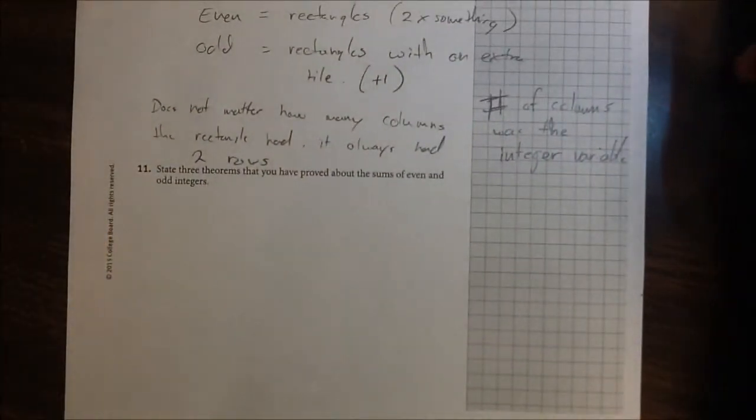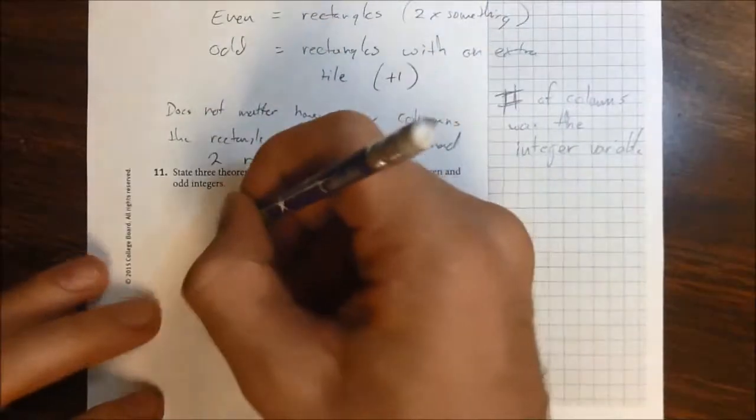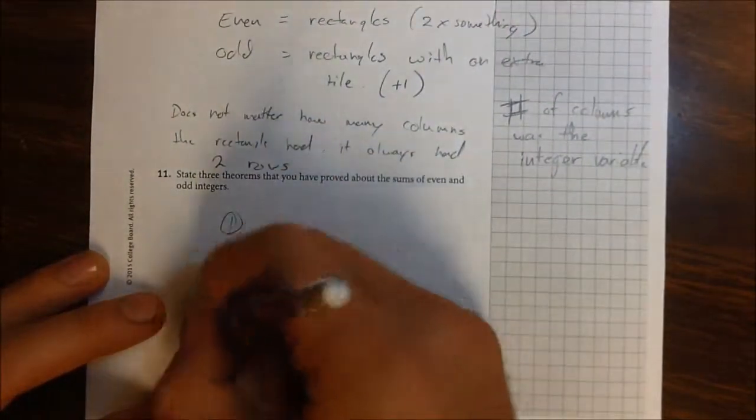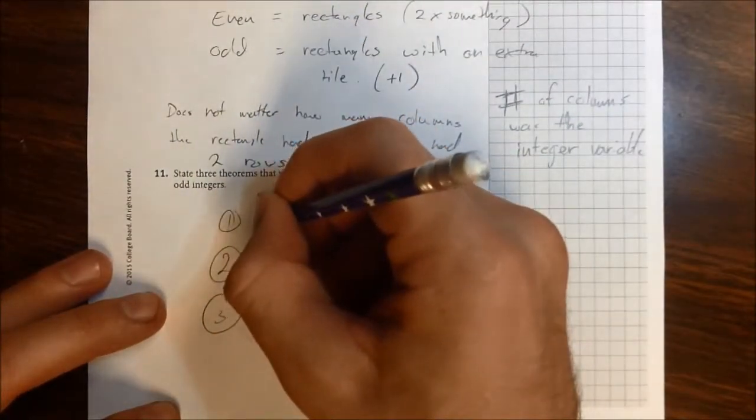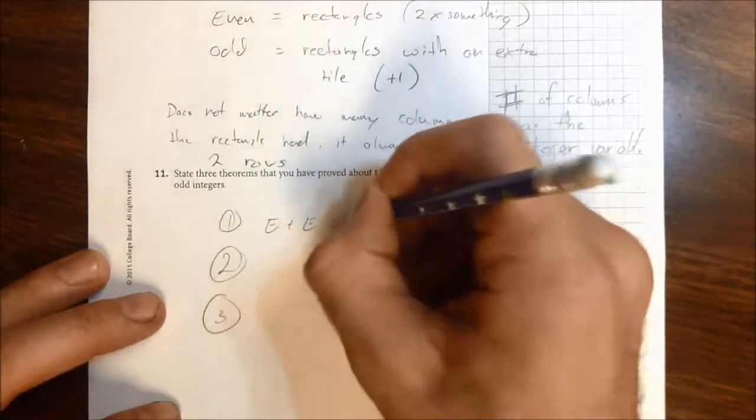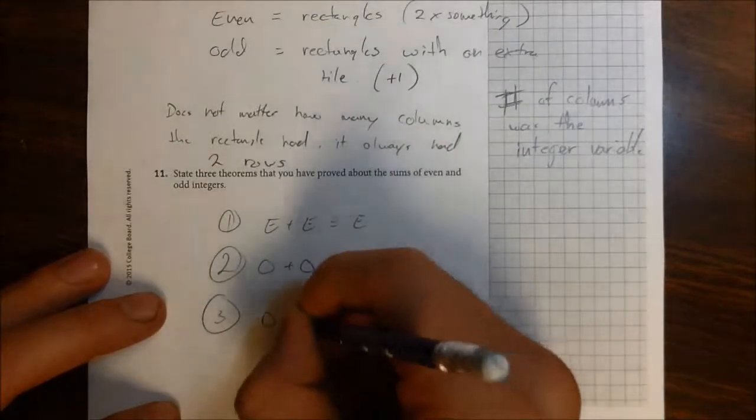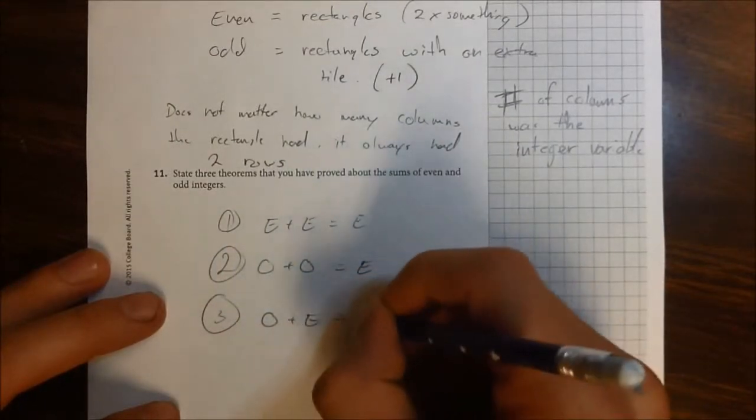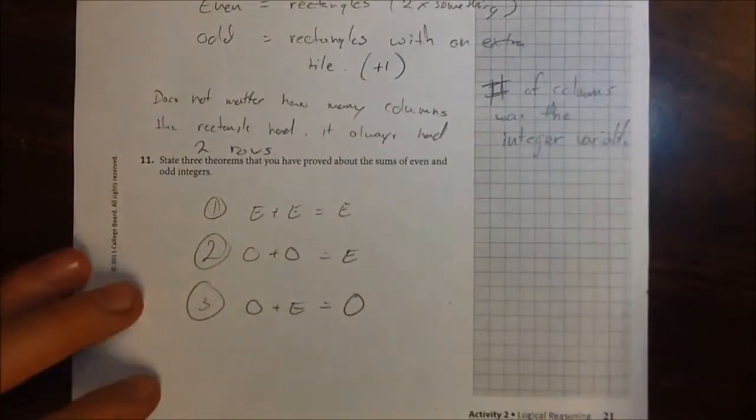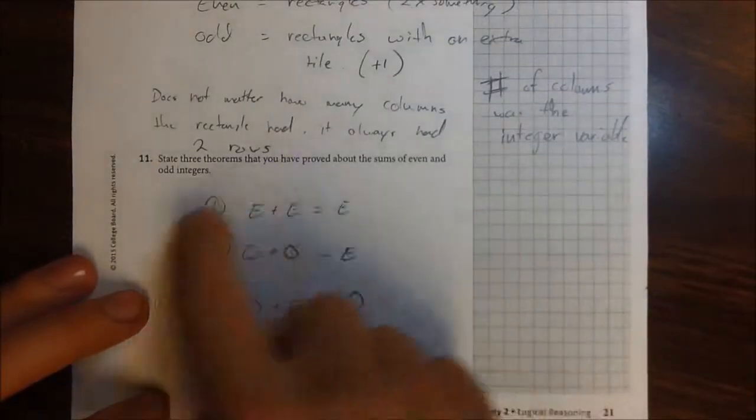And item 11, it says, state three theorems that you have proved about the sum of even and odd integers. So the three of them, they are now theorems, and we can say with confidence that an even plus an even is going to equal an even, and an odd plus an odd is equal to an even, and an odd plus an even will equal an odd. I know that's not very mathematically correct.